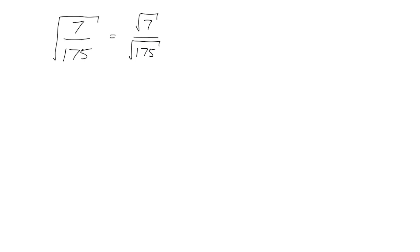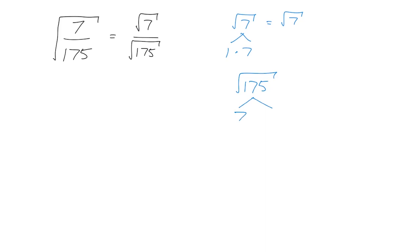For the square root of 7, you can't do anything because 1 times 7 is all you can do — it's already prime. There's no way to make it any simpler; there are no pairs anywhere. For the square root of 175: 7 times 25 makes 175, and 5 times 5 makes 25. These are all prime. I see a pair of 5s, so I pull out a single 5. The 7 is orphaned and stays under the radical. So the square root of 175 is 5 times the square root of 7.